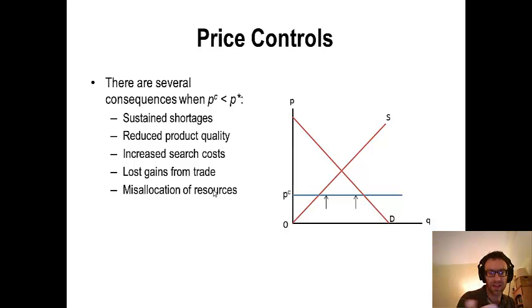There are lots of consequences of a price ceiling, many of which come right out of the presence of a shortage. For the purpose of time, we're only going to be focusing on the sustained shortages and the lost gains from trade. The reduced product quality, the increased search costs, and the misallocation of resources are all very interesting, but topics we'll not be getting into at this time.